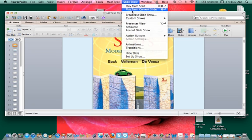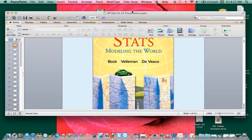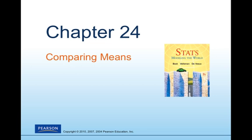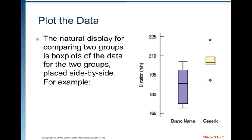Welcome to Chapter 24 for AP Statistics. Today we're going to talk about comparing means. The natural display for comparing two groups is the box plot of the data for the two groups placed side by side.